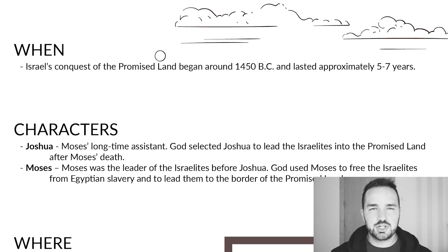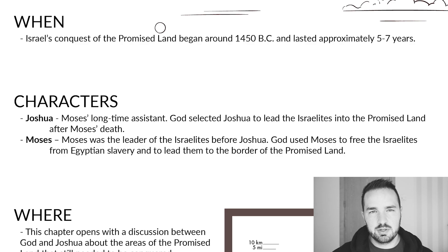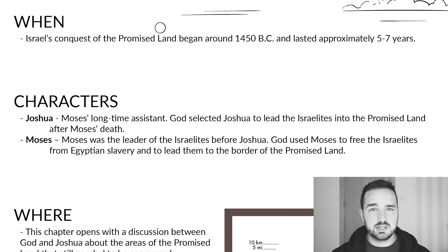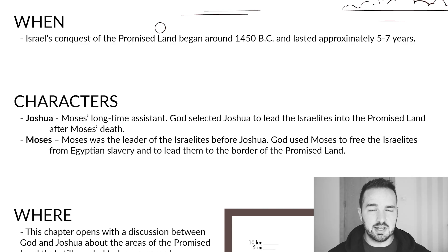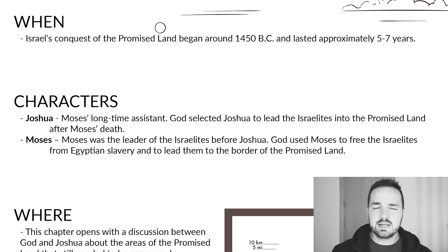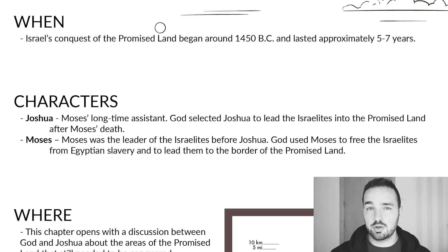There are two main characters in this chapter that you're probably going to be familiar with. First is Joshua — he is the current leader of the Israelites, and he's been leading them on this military campaign. We're also going to talk about Moses. Moses was the leader of the Israelites before Joshua; he died back at the end of the book of Deuteronomy.